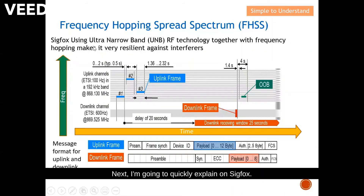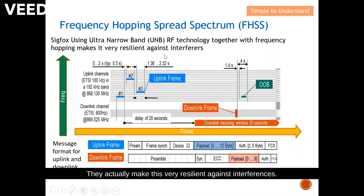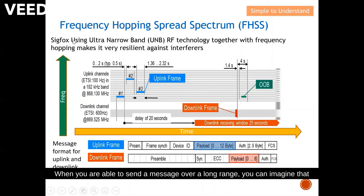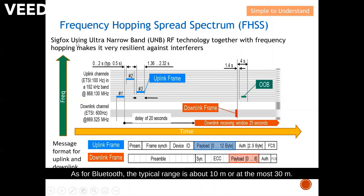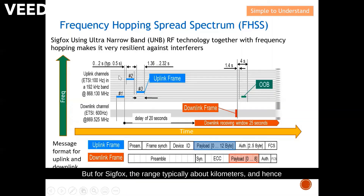Next, I'm going to quickly explain Sigfox, which also uses ultra-narrow band frequency hopping, making it very resilient against interference. Sigfox is potentially able to send a message over a very long range. When you can send over a long range, there will be more and more users compared to, say, Bluetooth which has a typical range of about 10 to 30 meters. Sigfox has a typical range of around one kilometer, and hence there will be far more users as compared to Bluetooth.